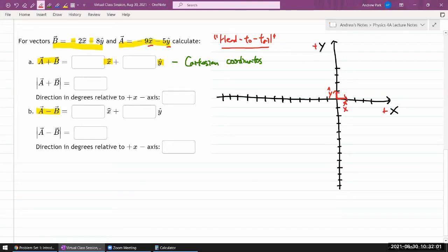And this is y hat vector of another unit length in the direction of positive y direction. Positive x and positive y. So the vector A, its x component is minus 9 so I'm going in the opposite direction from the x hat. So let me count 1, 2, 3, 4, 5, 6, 7, 8, 9. And then it has a y component of minus 5, so I'm again going in the opposite direction from y hat. 1, 2, 3, 4, 5.